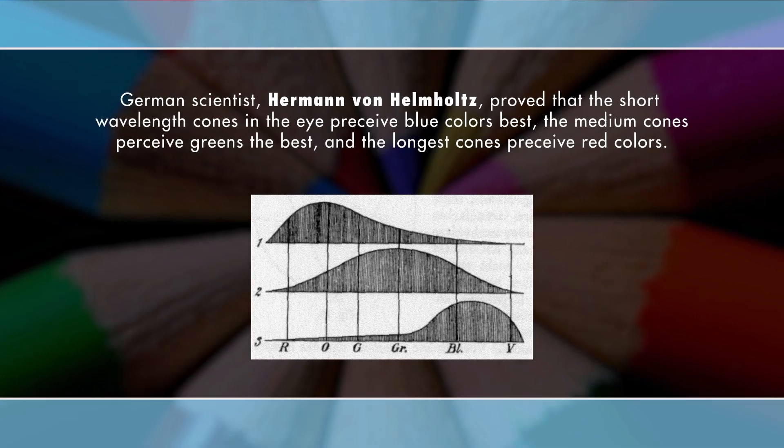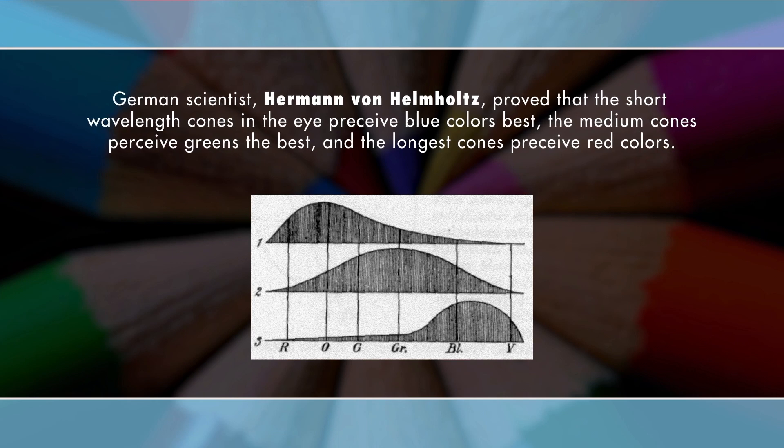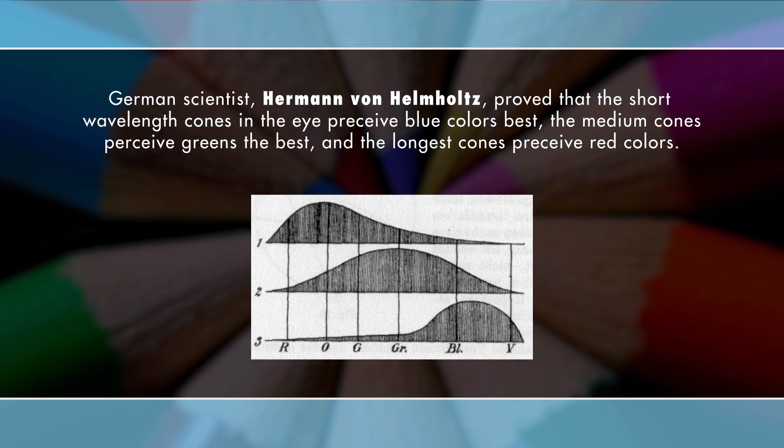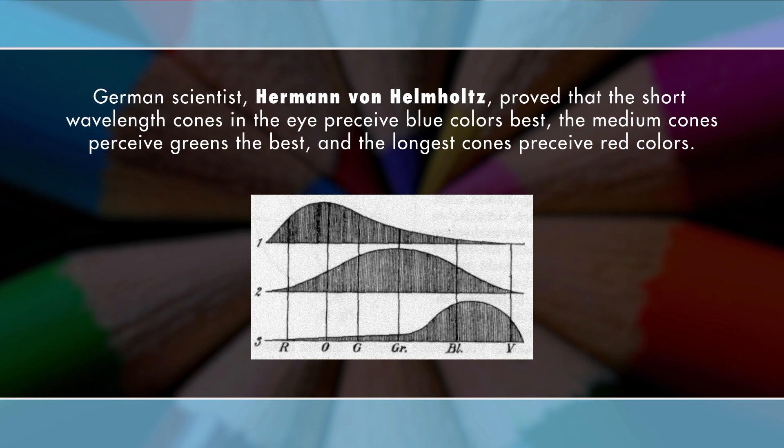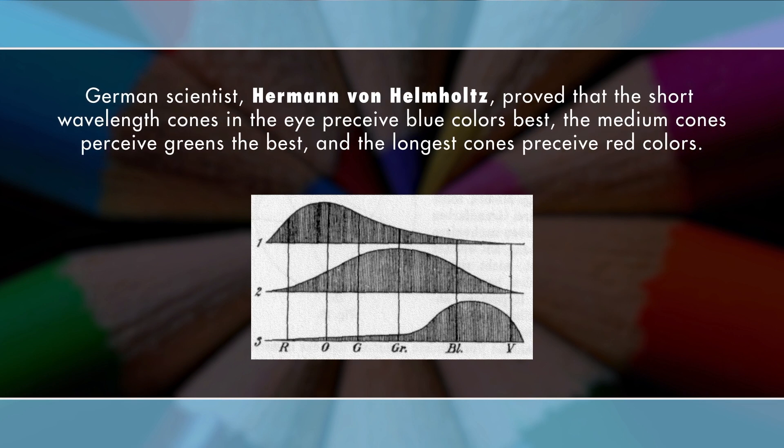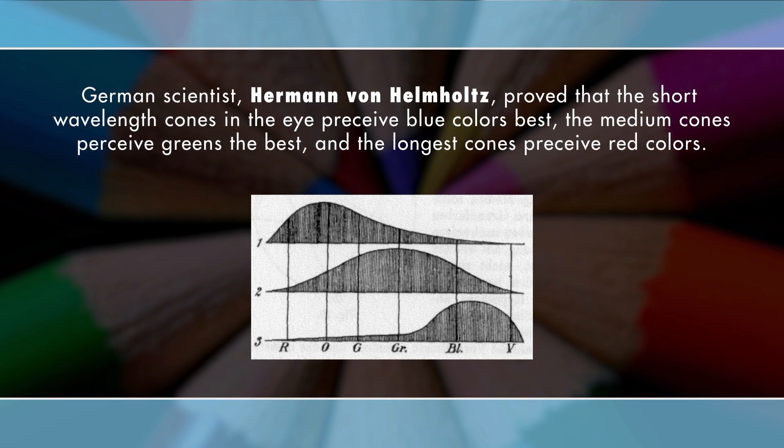However, it wasn't until the 1860s that German scientist Hermann von Helmholtz proved that the short wavelength cones in the eye perceive blue colors best, the medium length cones perceive greens the best, and the longest cones perceive red colors. This theory became known as the trichromatic theory of color vision. Since the cones in our eyes perceive these three colors of red, green, and blue, they are considered primary colors in additive color mixing.